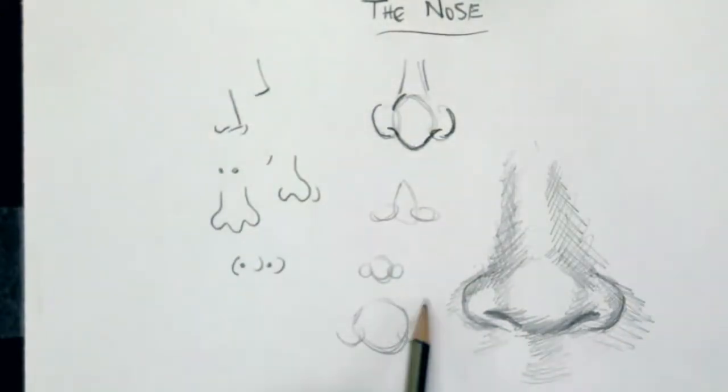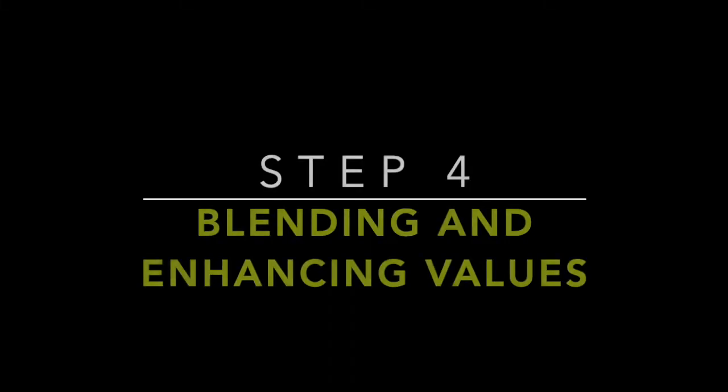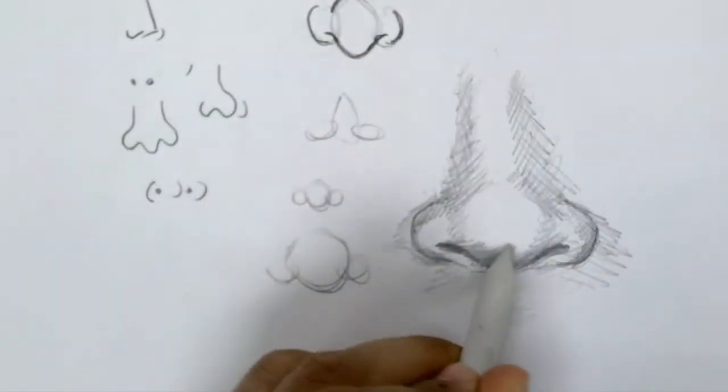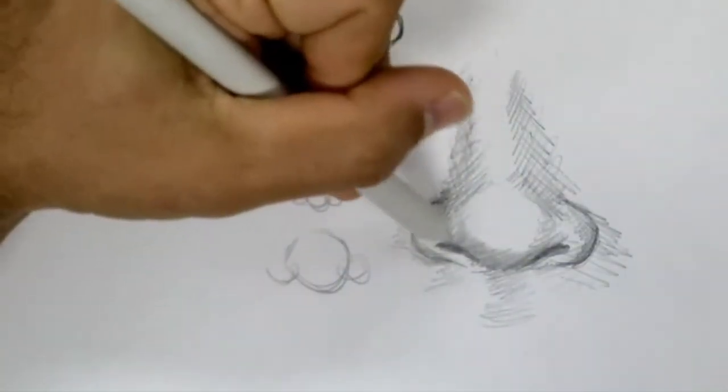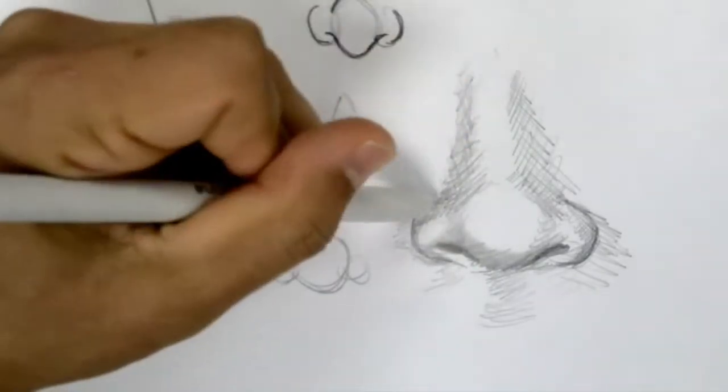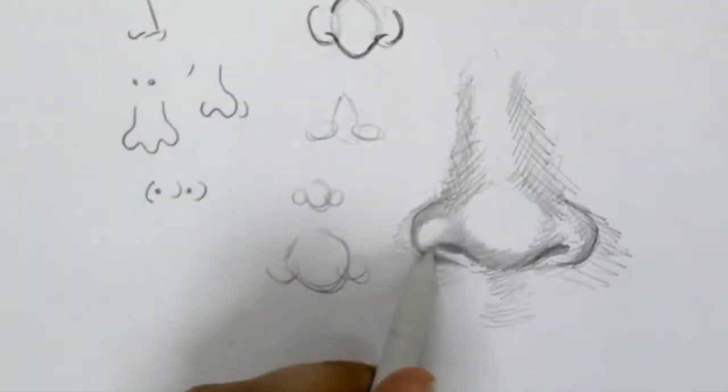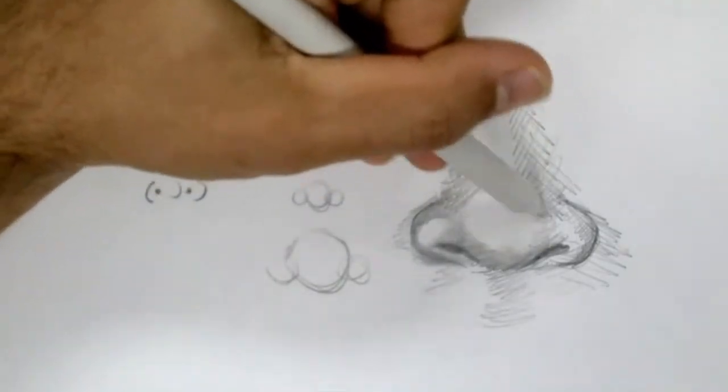I'm going to use some blending tools now. You can use Q-tips, you can use paper towels depending on the space that you're working in. And I'm going to start to model and soften edges.